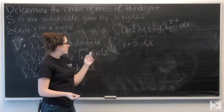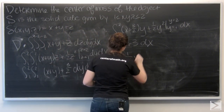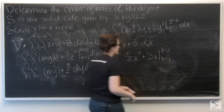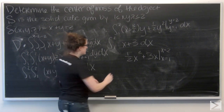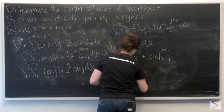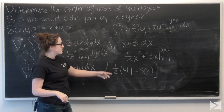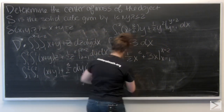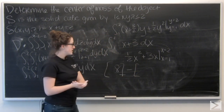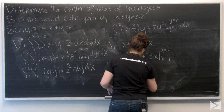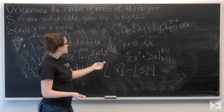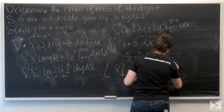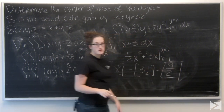Integrating x plus 3 with respect to x: x becomes one-half x squared, and 3 becomes 3x. Evaluating from x equals 1 to x equals 2: for x equals 2, I have one-half times 4 which is 2, plus 3 times 2 which is 6, so 8 total. For x equals 1, I get one-half plus 3, which is three and a half. So 8 minus three and a half gives four and a half, which is nine-halves. That's the denominator for all of my center of mass coordinates.